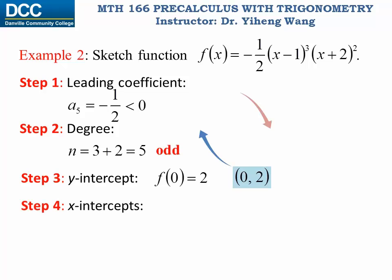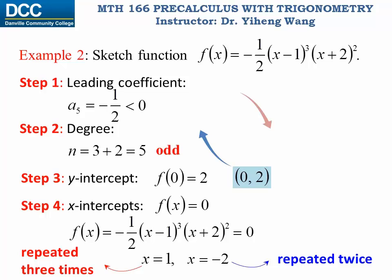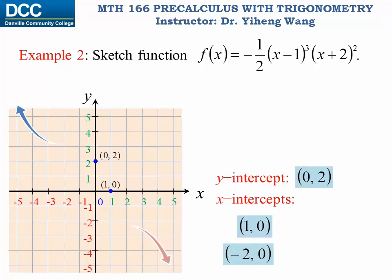Step 4 — x-intercepts: set the function to 0 and solve for x. Since the function is already in factored form, this is straightforward. We get x = 1, repeated 3 times, and x = -2, repeated twice. So the x-intercepts are (1, 0) and (-2, 0). Right tail goes down, left tail goes up, y-intercept at (0, 2), and x-intercepts at (1, 0) and (-2, 0).